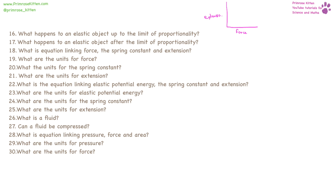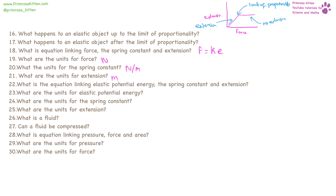With an elastic object, up to the limit of proportionality, it is going to keep extending. When it reaches the limit of proportionality, no matter how much force you exert on it, it is not going to extend any further. The equation linking force to spring constant and extension is: force equals the spring constant times extension. The units for force are newtons, spring constant is newtons per meter, and extension is meters.